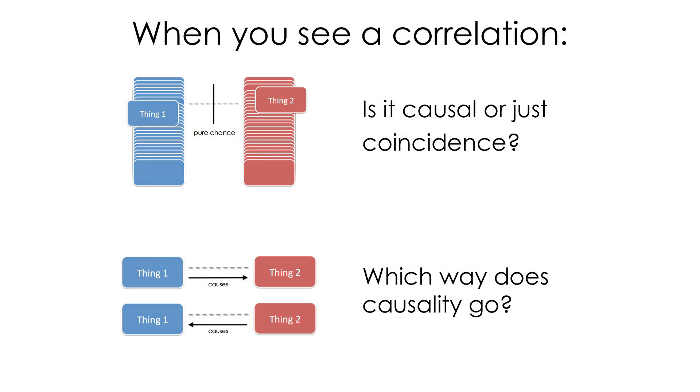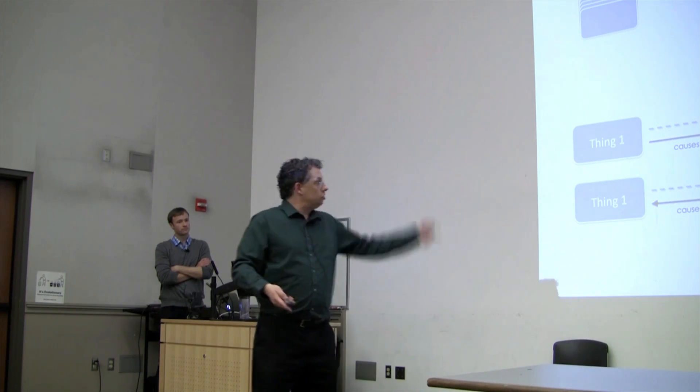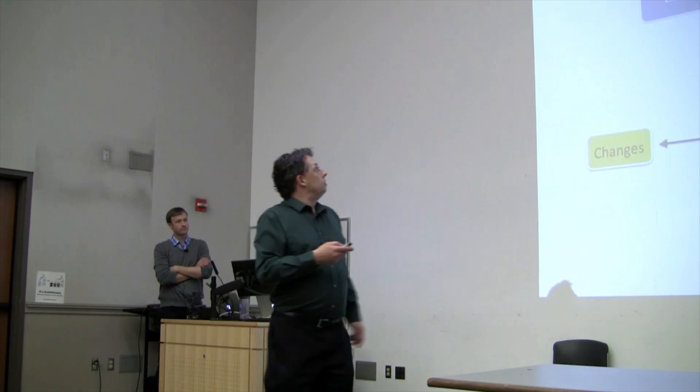You see a claim about causality or an implicit claim about causality because of the structure of a graph. Which way does the causality actually go? Have they really put the independent variable on the x and the dependent variable on the y? Or is it reversed? Don't be fooled by that.